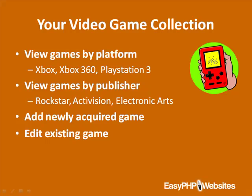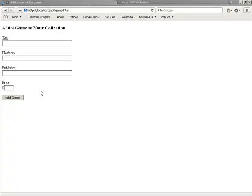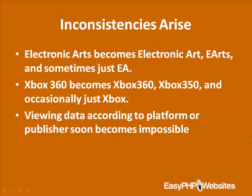The form used to add a game looks like this. As you use this form to add new video games to your collection, inconsistencies begin to arise. For instance, at first you diligently type the publisher's name in its entirety, entering Electronic Arts, for instance. However, over time, variations such as Electronic Arts, eArts, and sometimes just EA start to creep in.